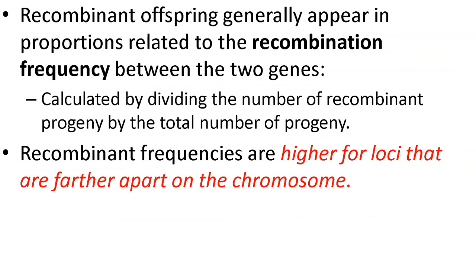Recombinant frequency is calculated by dividing the total number of recombinant progeny by the total number of progeny. Recombinant frequencies are higher for genes that are further apart on the chromosome, and that makes sense. If genes are super close together, even if crossing over happens, they probably still go together. But if you have gene A here and gene B way down at the bottom, recombinant frequency is going to be higher because crossing over will separate these more often.